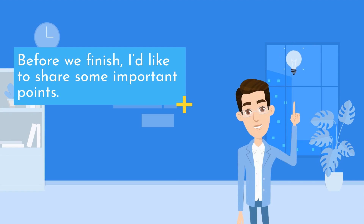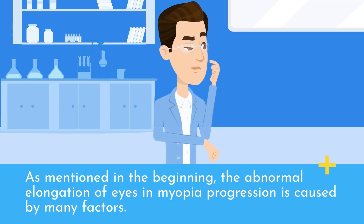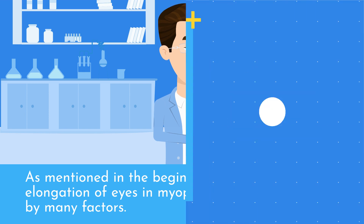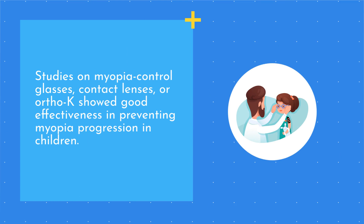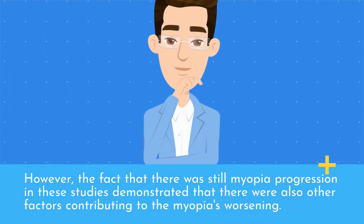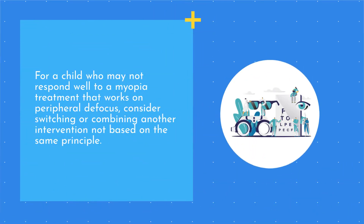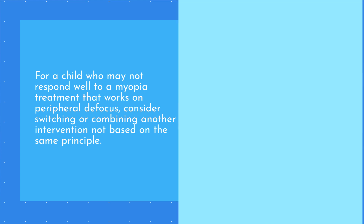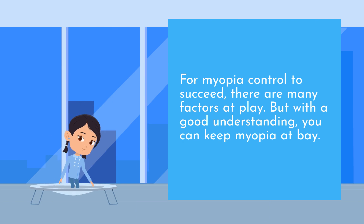Before we finish, I'd like to share some important points. As mentioned in the beginning, the abnormal elongation of eyes in myopia progression is caused by many factors. Studies on myopia-controlled glasses, contact lenses, or Ortho-K showed good effectiveness in preventing myopia progression in children. However, the fact that there was still myopia progression in these studies demonstrated that there were also other factors contributing to the myopia worsening. For a child who may not respond well to a myopia treatment that works on peripheral defocus, consider switching or combining another intervention not based on the same principle. For myopia control to succeed, there are many factors at play, but with a good understanding, you can keep myopia at bay.